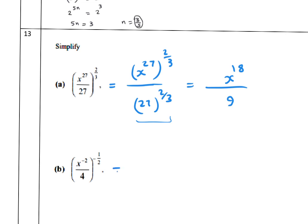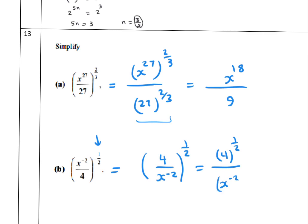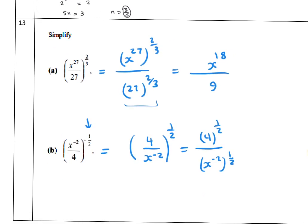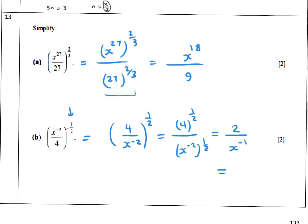Problem 14: simplify (4/x^(−2))^(1/2). If you have a fraction with a negative power, you can flip the fraction and change the sign of the power. Distribute: 4^(1/2) equals 2, and (x^(−2))^(1/2) equals x^(−1). Since x^(−1) in the denominator becomes x in the numerator, the answer is 2x.